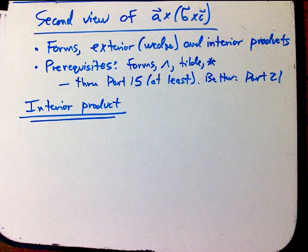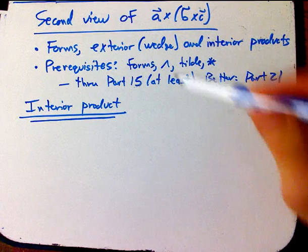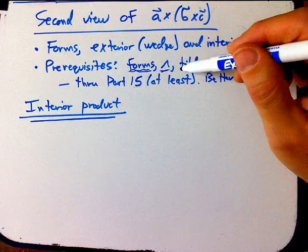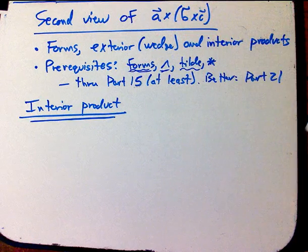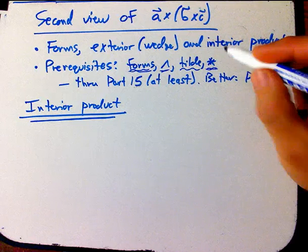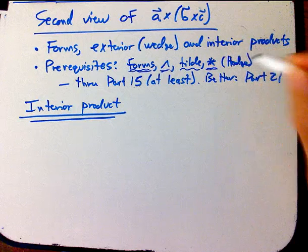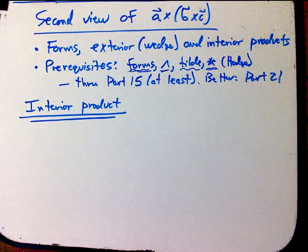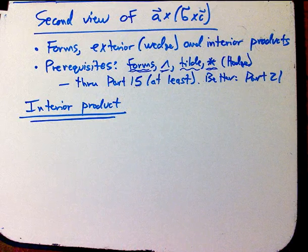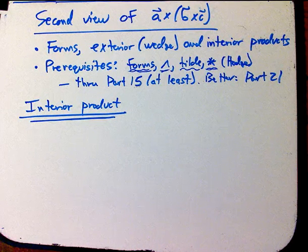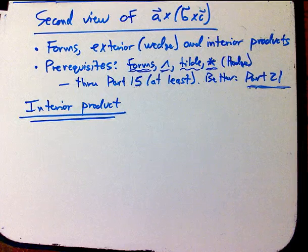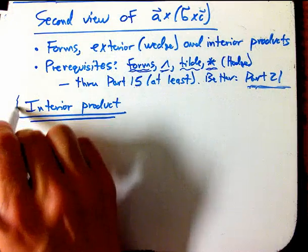The prerequisites here are to understand the basics of the algebra of differential forms, what a differential form is, the wedge product, the tilde operation that I use in the intro to differential forms videos quite a bit, and a little bit about the star, called the Hodge star operator, which I also use quite a bit in those videos. In other words, something that's equivalent to part through part 15 at the very least of the intro to differential forms videos, and better through part 21, or even through like 30 or 31, if you want to see an alternate presentation of this.